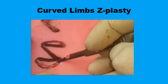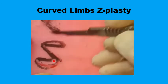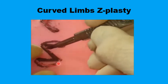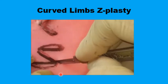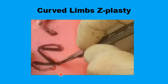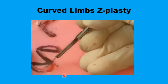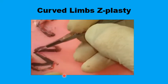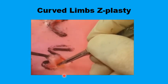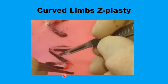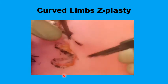Notice that the angle of the flaps has now increased significantly by curving the line, and that would help with the viability of the flap tip. Then the flaps are mobilized by undermining.